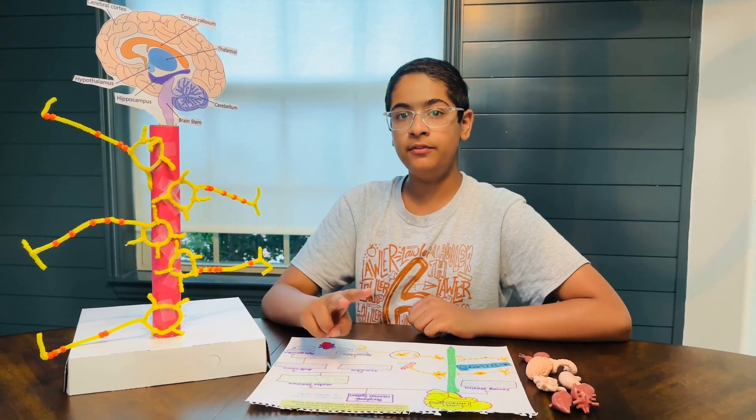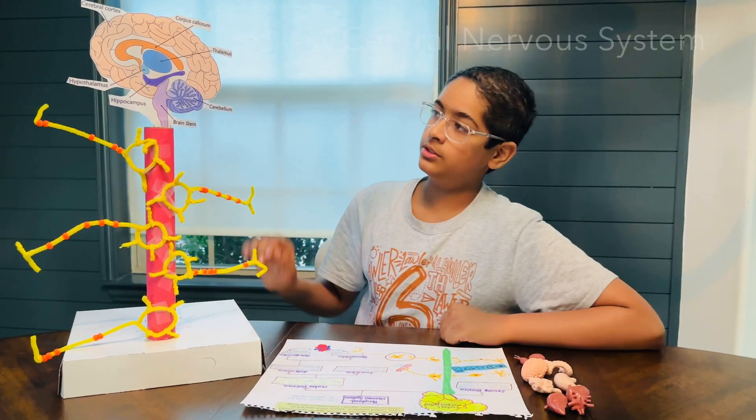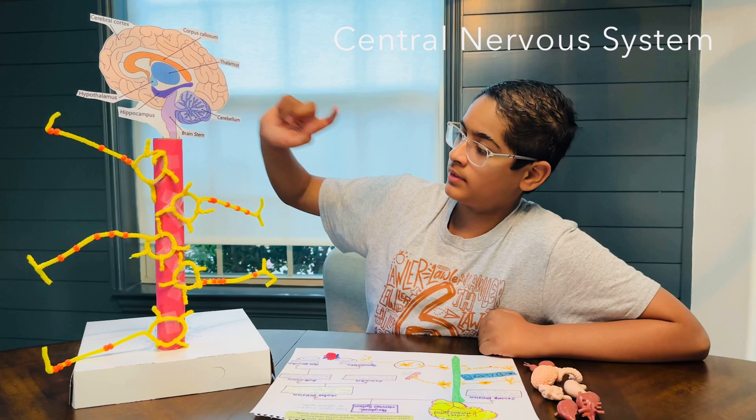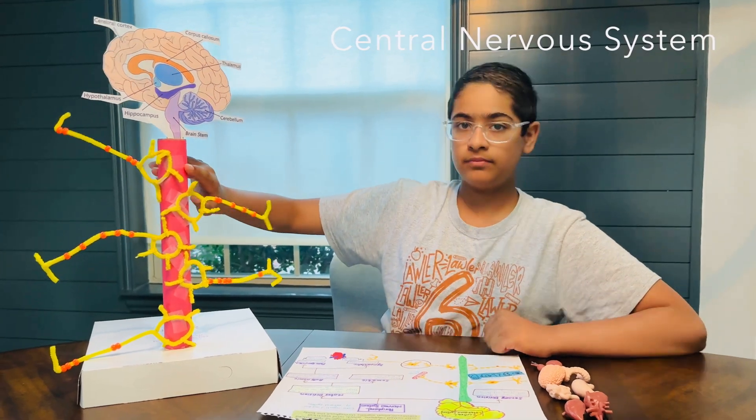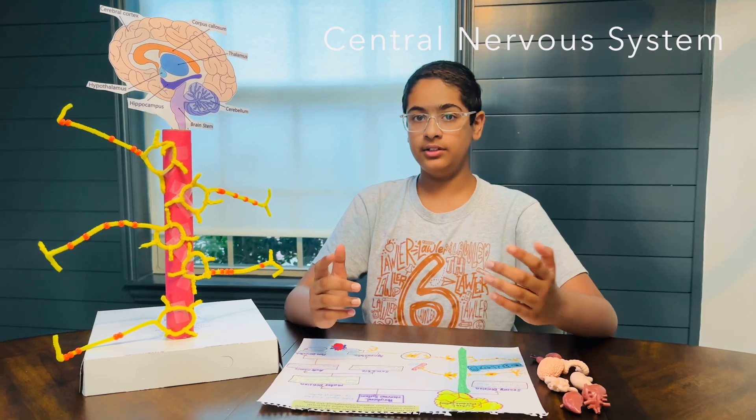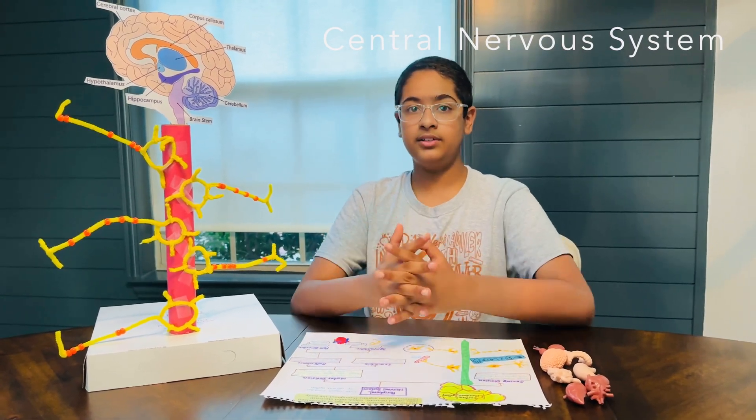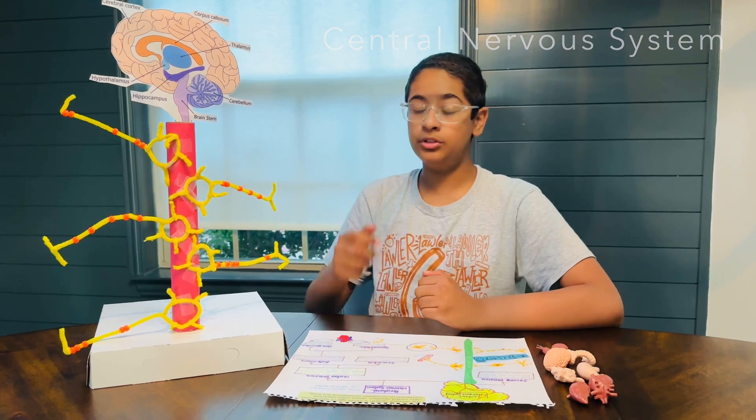CNS, and the peripheral nervous system, PNS. So the central nervous system includes the brain and the spinal cord. The brain and spinal cord act as the main command center of the entire nerves. They receive and send signals in order to complete or do an action.